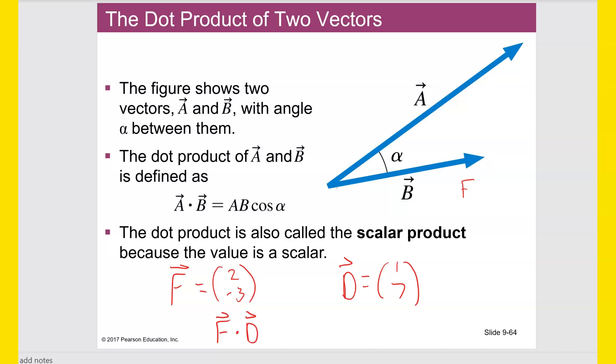Where you do F dot D, which is, and this is going to come up with the same answer that this would have. And the way that you do that, 2, negative 3, dot 1, 7. Let me just show you the generic way to do a dot product. Let's say you got AB dot CD. That's going to be A times C plus B times D.